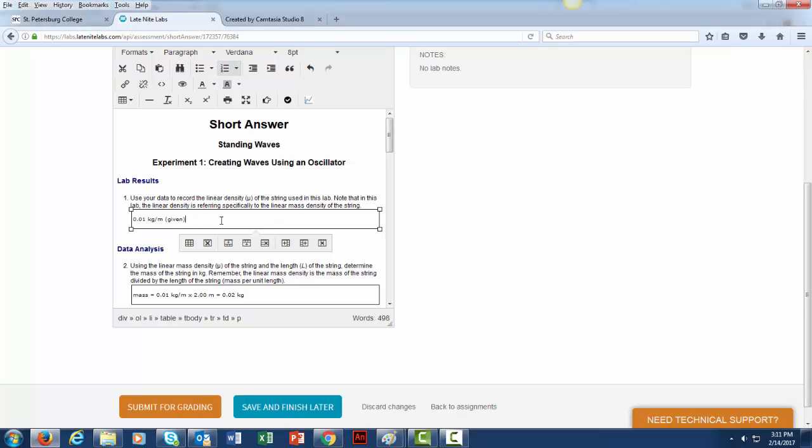You're actually given this value. This is the value of mu, which is the linear density. That's a Greek letter mu right there.